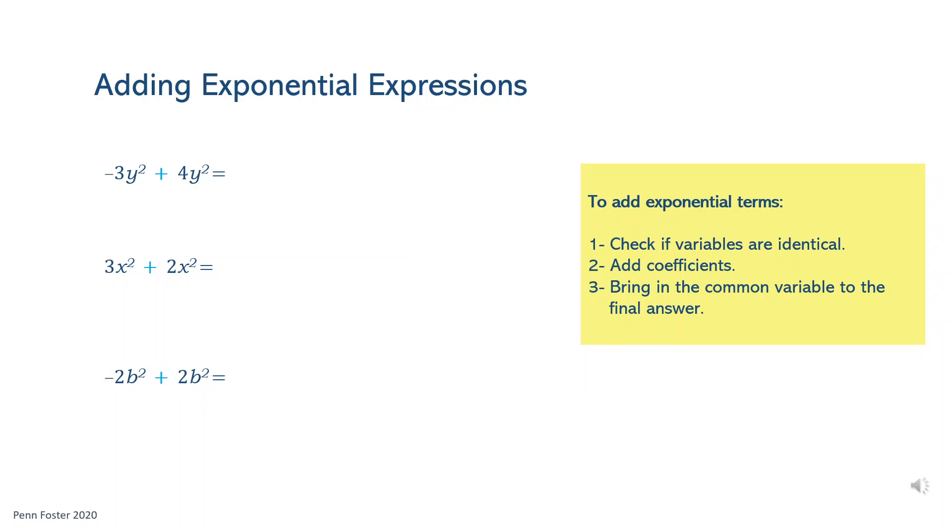Therefore, let's combine the coefficients negative 3 and 4. Negative 3 plus 4 is the same as 4 minus 3, which is 1. The answer is 1y squared. In algebra, the coefficient 1 is understood rather than written out, so the final answer is y squared.